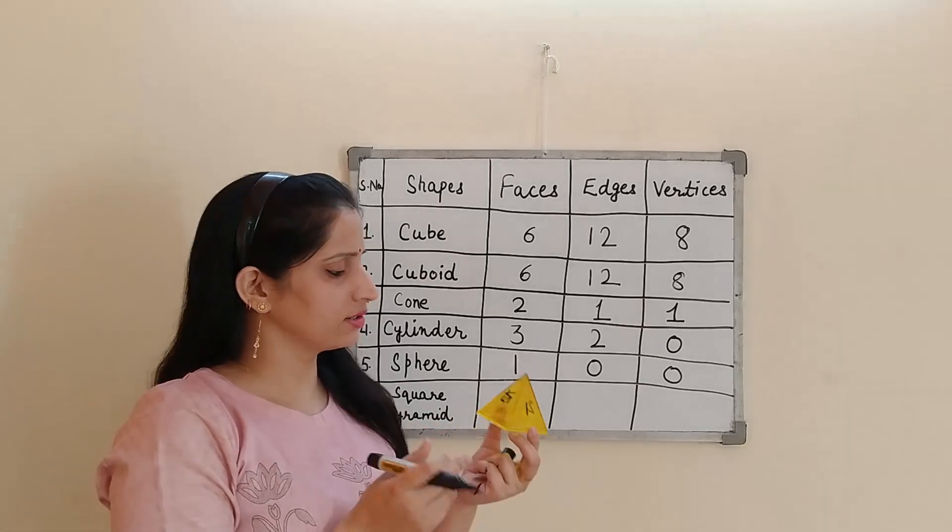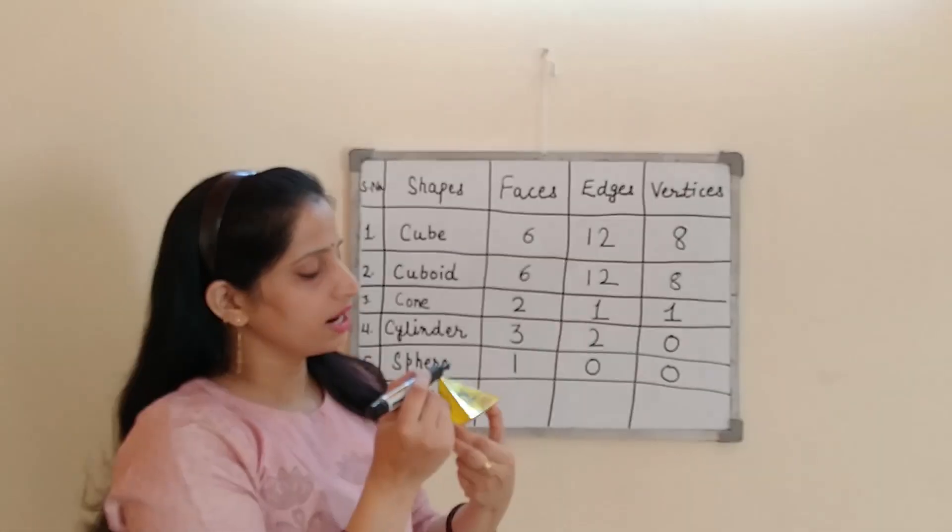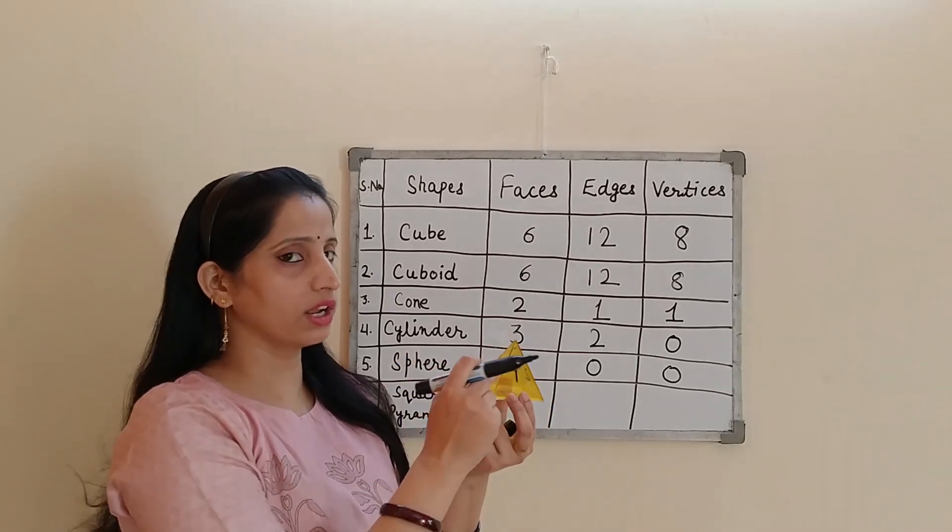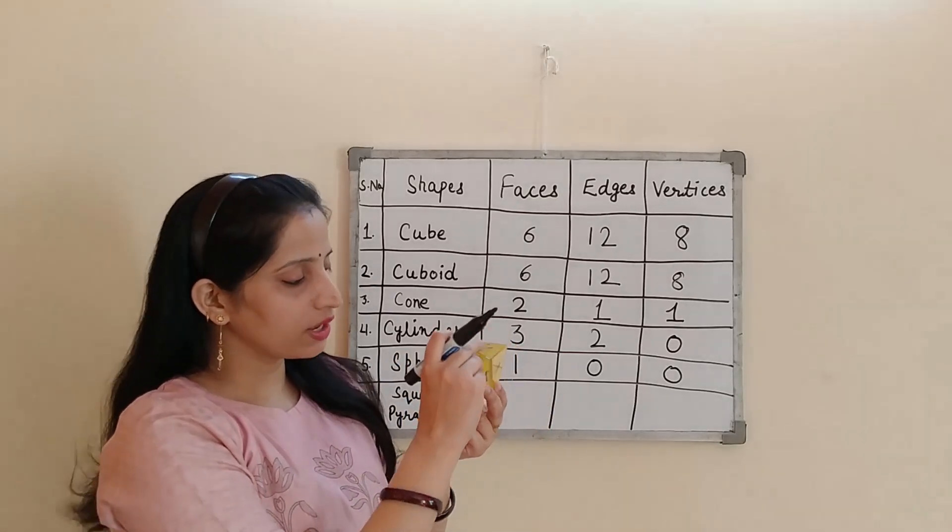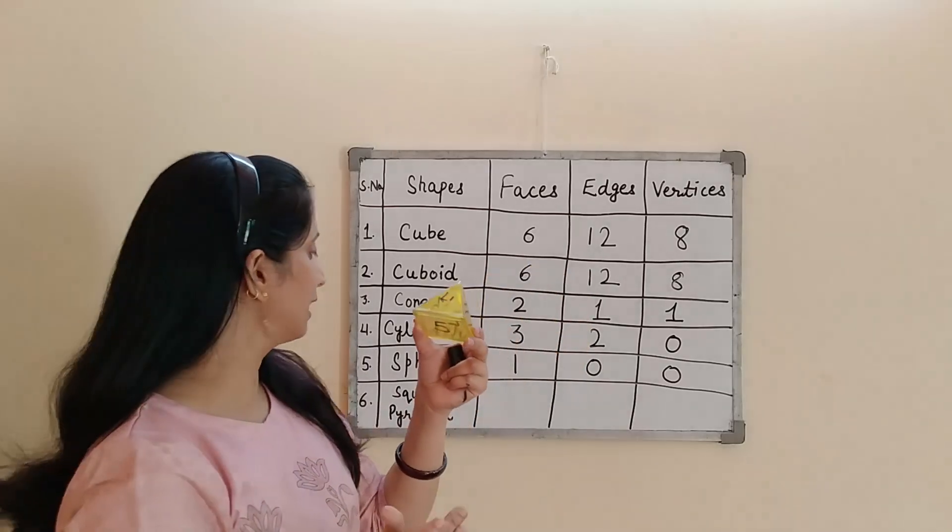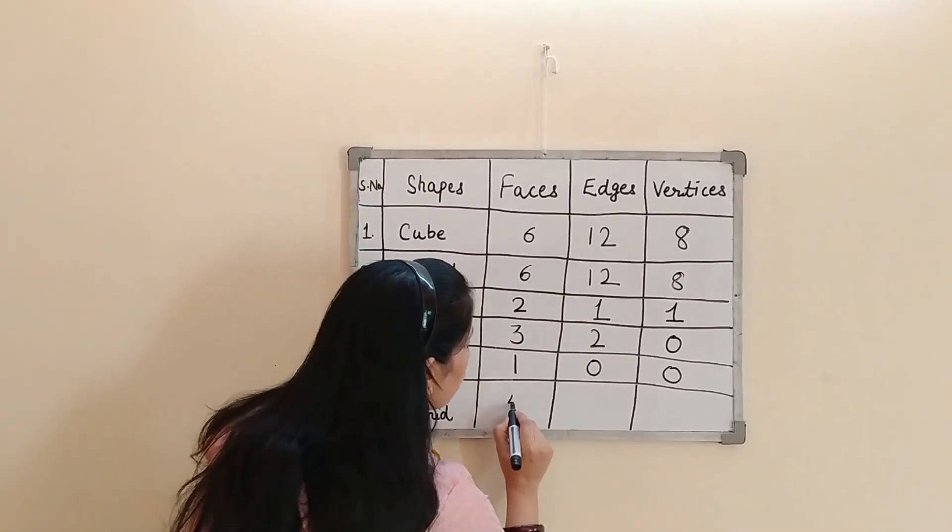Okay. So let's start counting its faces. So 1, 2, 3, and 4. 4 faces are triangular in shape. And the 5th one is square in shape. So total number of faces in this square pyramid is 5.